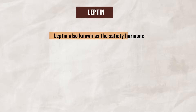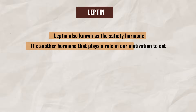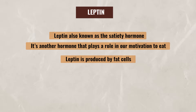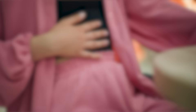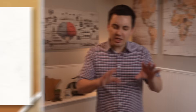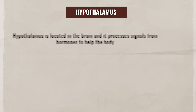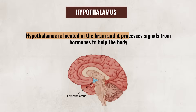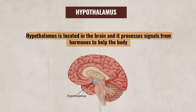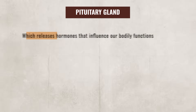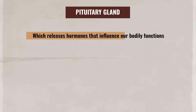Leptin, also known as the satiety hormone, is another hormone that plays a role in our motivation to eat. Leptin is produced by fat cells. As leptin levels increase, the hypothalamus registers that you are full, which then reduces your motivation to eat. Just think of ghrelin as that voice in your stomach yelling 'food now,' and leptin as that chill friend who's like, 'it's okay dude, we're good, put the pizza down.' The hypothalamus is located in the brain and processes signals from hormones to help the body. It works with the pituitary gland, which releases hormones that influence our bodily functions.